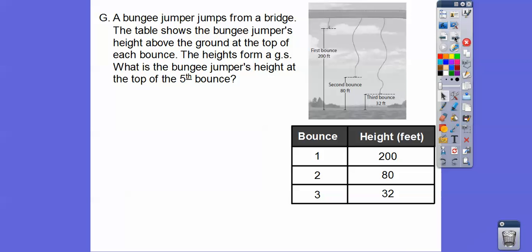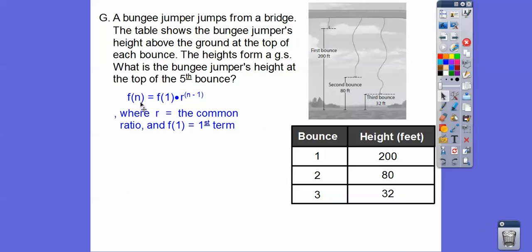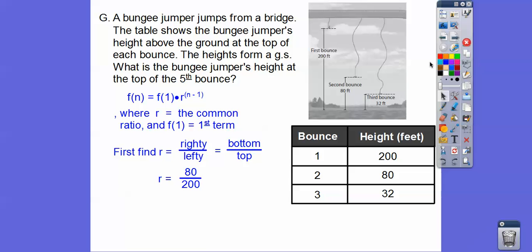The first thing we've got to do is calculate R. Our formula is F(N) equals the first term times R to the (N minus 1). Let's find R: righty divided by lefty. Since these end in zeros I'll pick 80 divided by 200 — the zeros cancel giving us 8 over 20, which simplifies to 2/5. So R is two-fifths. Now we plug two-fifths in and the first term is 200.